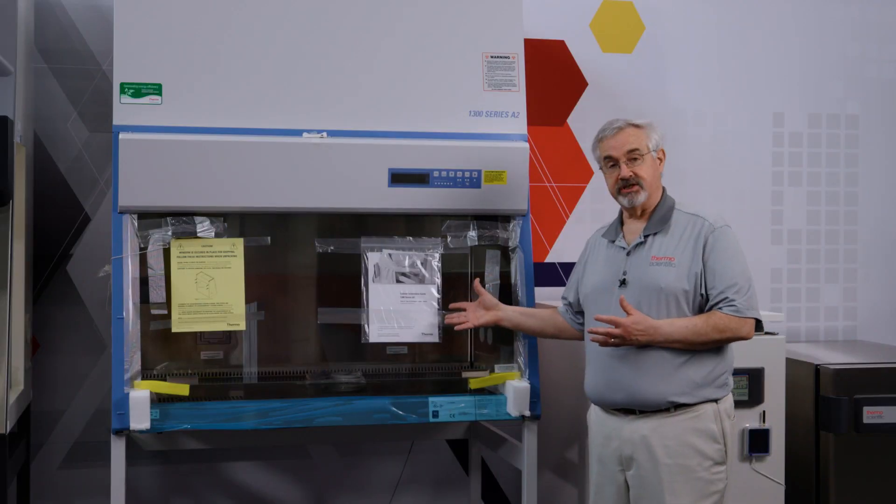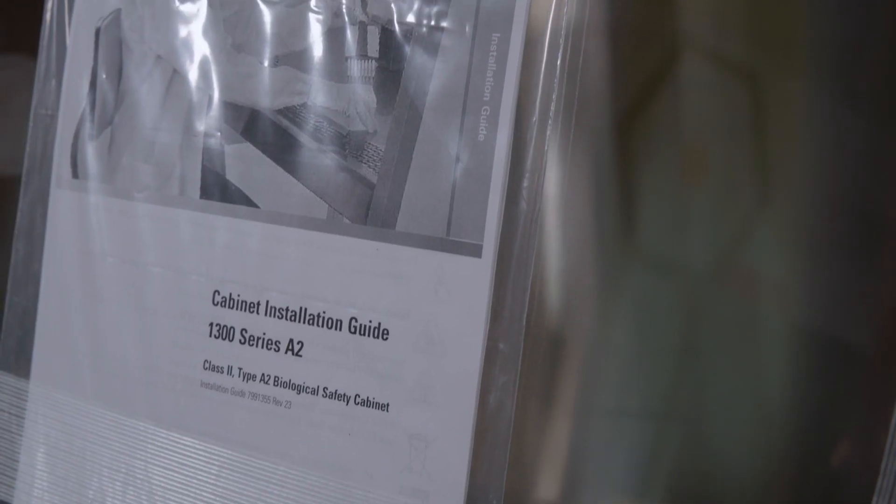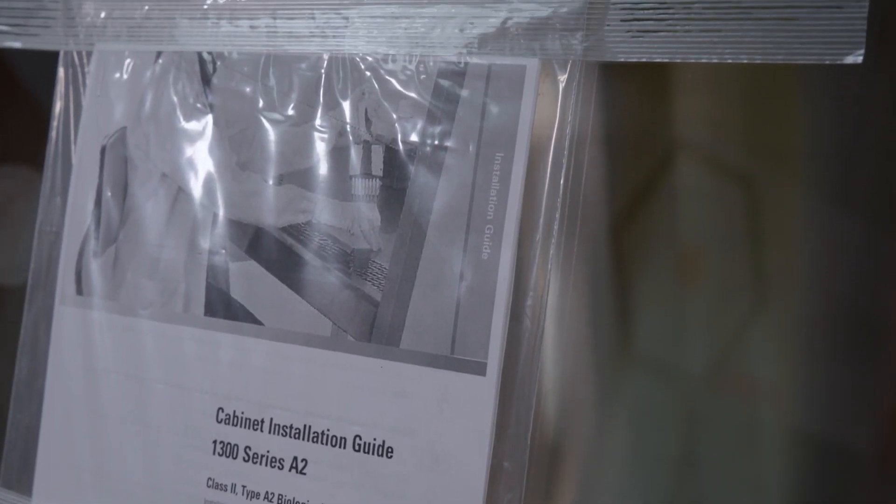The cabinet will have an installation guide attached to the front window. In the installation guide, it will describe how to unpack the cabinet from the pallet, which we've done, how to assemble the stand, which we've done, and how to place the cabinet onto the stand.